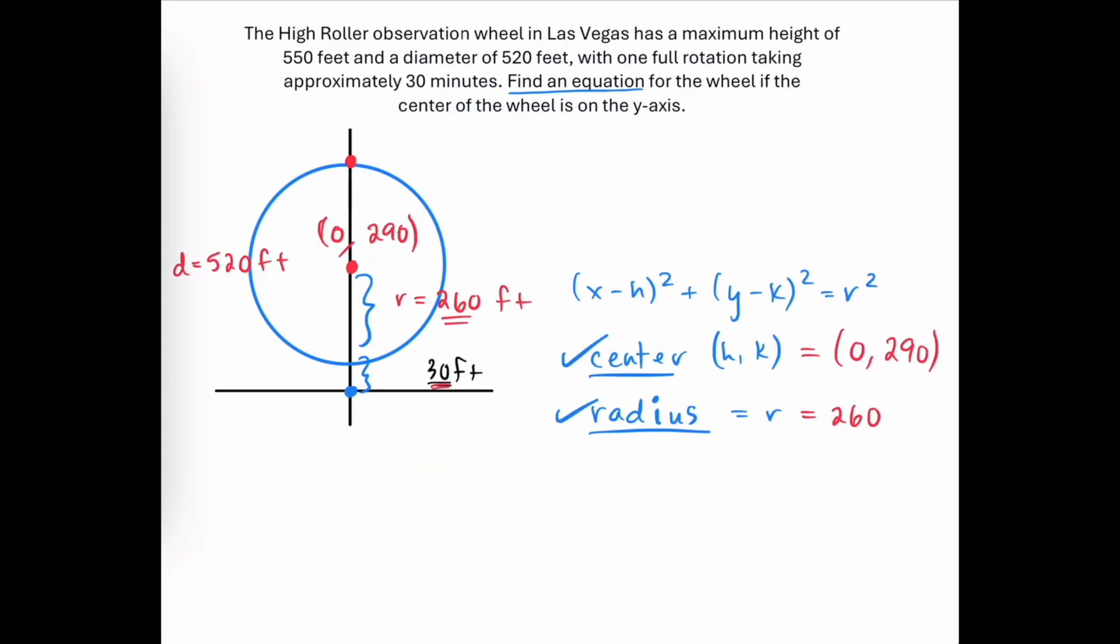Now that we have the center and the radius, let's plug it back into the standard form of the equation of the circle, to get x minus the x-coordinate of the center is 0. We'll square that quantity, plus y minus the y-coordinate of the center is 290, and the radius is 260, and that quantity is to be squared.